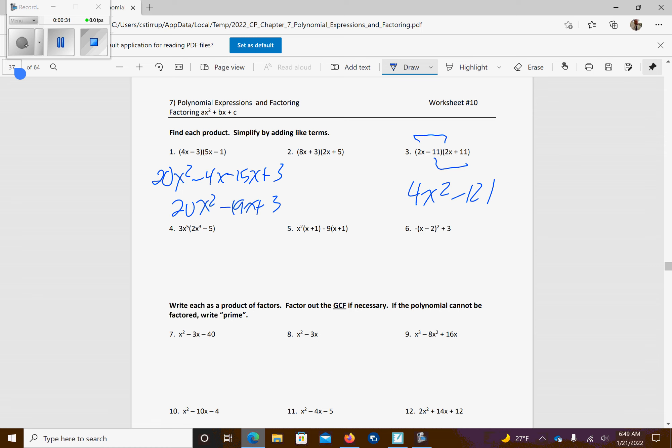Number 5, what we're going to do first is we're going to distribute over the inner. So I'm going to get x to the third plus x squared. And then I'm going to distribute negative 9. And that's all you can do. There's no other like terms there.